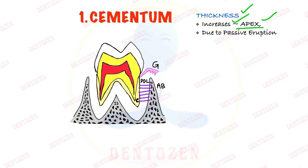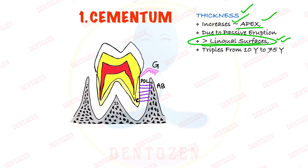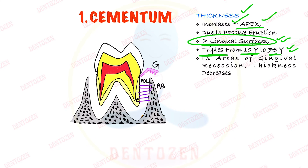More cementum is deposited over the lingual surfaces of teeth compared to the other surfaces, and this thickness triples from 10 years of age to 75 years of age. However, if there is gingival recession, in those cases the thickness of cementum decreases.